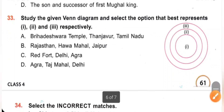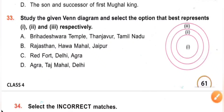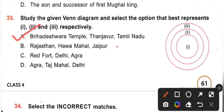Question 33: Study the given Venn diagram and select the option that correctly represents 1, 2, and 3 respectively. A. Brihadeeswara Temple, Thanjavur, Tamil Nadu. B. Rajasthan, Hawa Mahal, Jaipur. C. Red Fort, Delhi, Agra. D. Agra, Taj Mahal, Delhi. The correct answer is option A: 1 is Brihadeeswara Temple, 2 is Thanjavur, and 3 is Tamil Nadu, since Thanjavur is in Tamil Nadu. Option A is the correct answer.